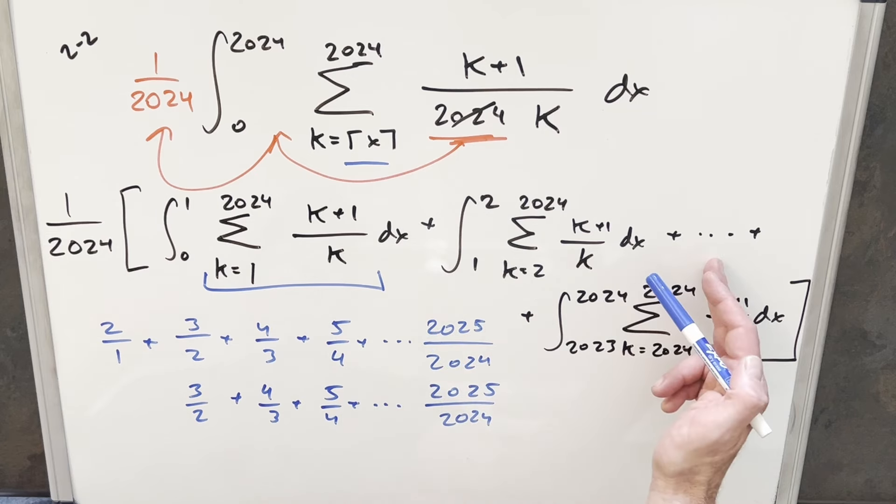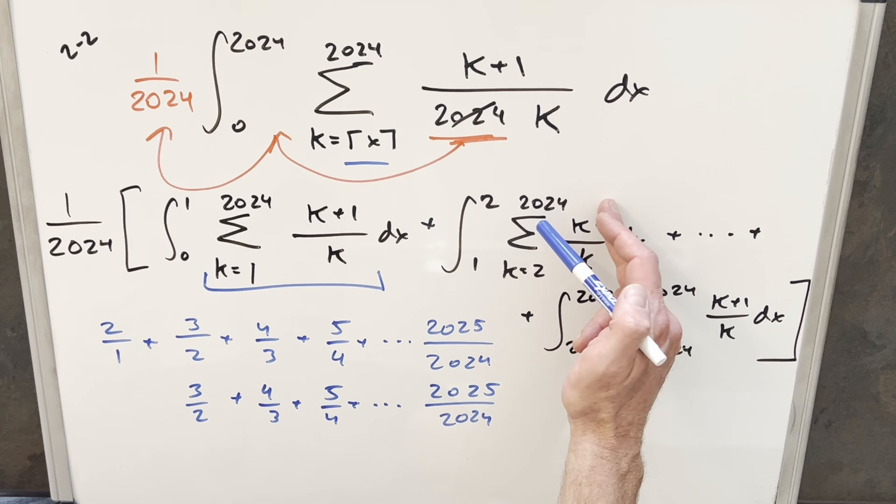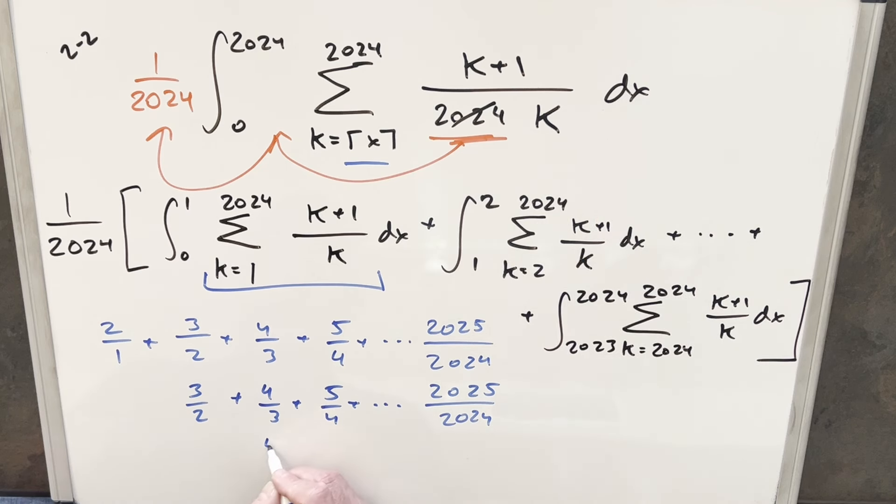And if we just looked at the next integral, where the integral is going from two to three, and the k value starting at three, well, then this is going to become four over three. So our first term for that one is going to be just four over three, plus five fourths, plus all this stuff. So what this whole problem actually comes down to is just finding a way to add up all these sums, and then just multiplying it by one over 2024.